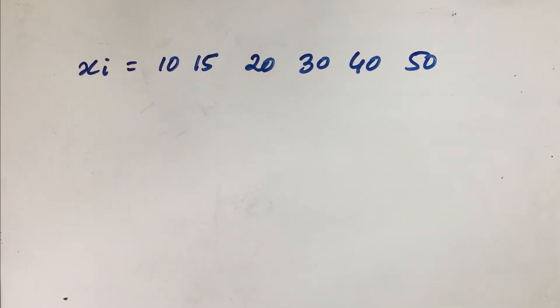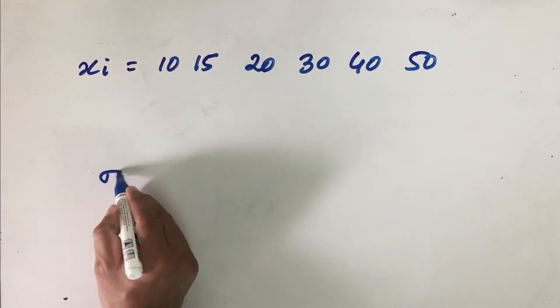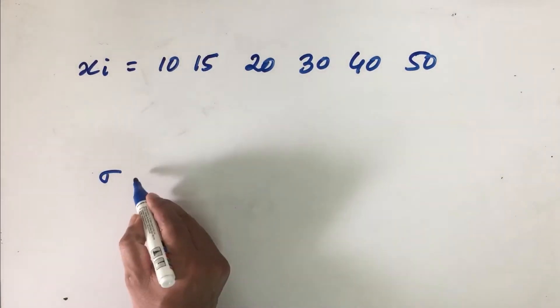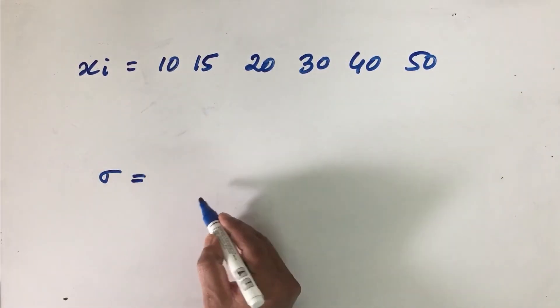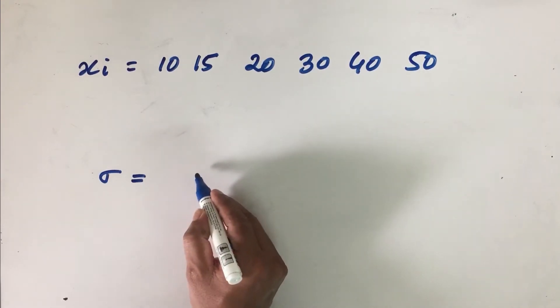Now in order to calculate standard deviation, we will - standard deviation is first of all denoted as sigma. Now sigma is calculated as the simplest formula is: